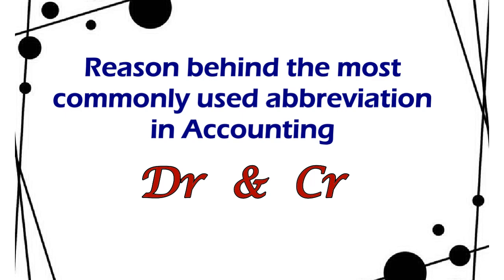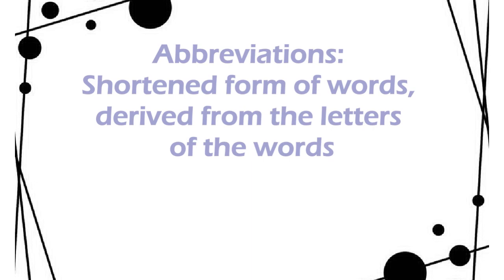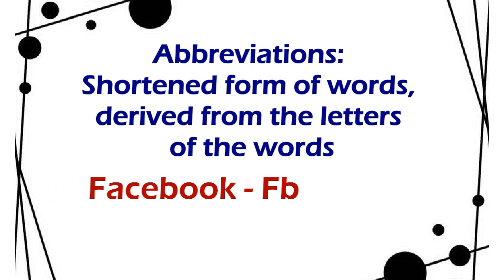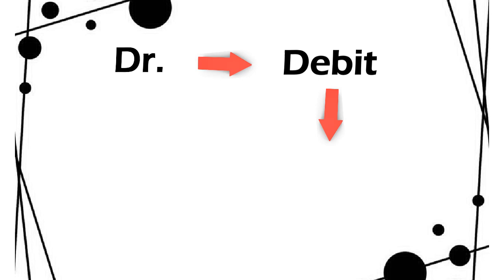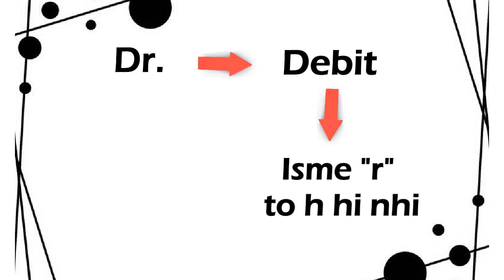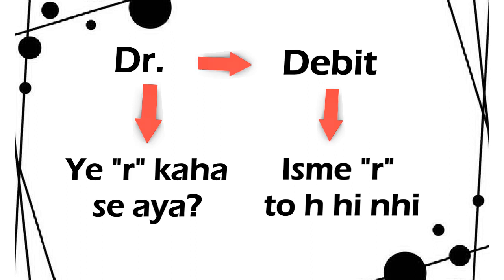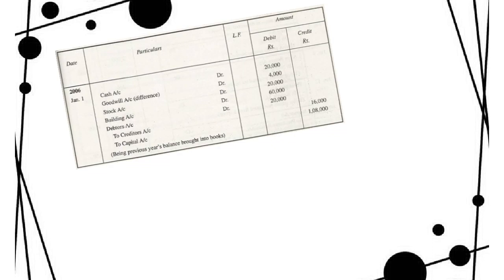We all know that abbreviations, short forms are always derived from words. So when we use DR, which stands for debit, but in the word 'debit', R does not come. So when we look at accounting, we see that CR means credit, DR means debit. In bank statements, we also have DR and CR, right?